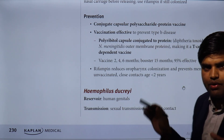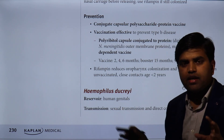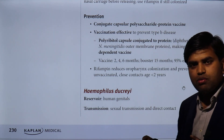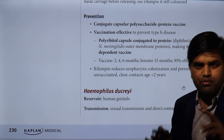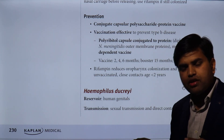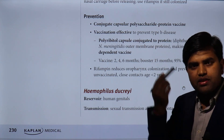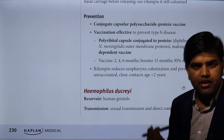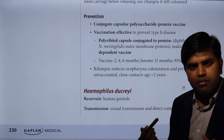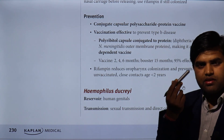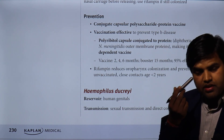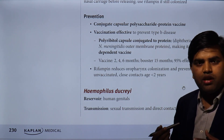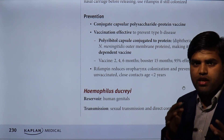Rifampicin reduces oropharyngeal colonization and prevents meningitis in unvaccinated close contacts under 2 years. In summary: Haemophilus influenzae has two types — capsulated (type B) responsible for epiglottitis, meningitis, and bacteremia — and non-typeable (non-capsulated) which causes sinusitis, conjunctivitis, bronchitis, and pneumonia.